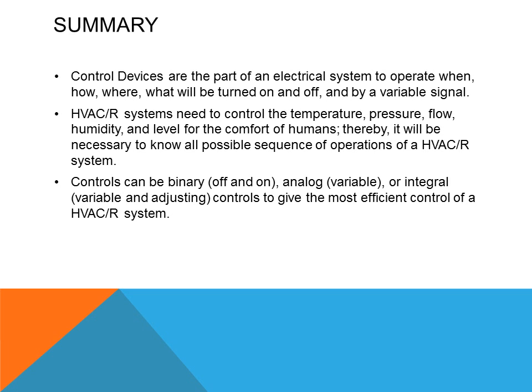To summarize this week's assignment: control devices are the part of an electrical system that determines when, how, where, and what will be turned on and off by a variable signal. HVAC and refrigeration systems need to control temperature, pressure, flow, humidity, and level for the comfort of humans. Therefore, it will be necessary to know all possible sequences of operation of an HVAC system. Controls can be binary — which is on/off — analog, which is variable, or integral, which is variable and self-adjusting, to give the most efficient control of an HVAC system.